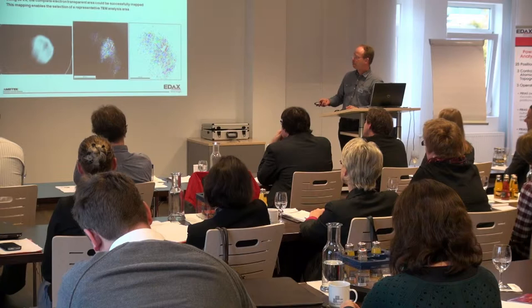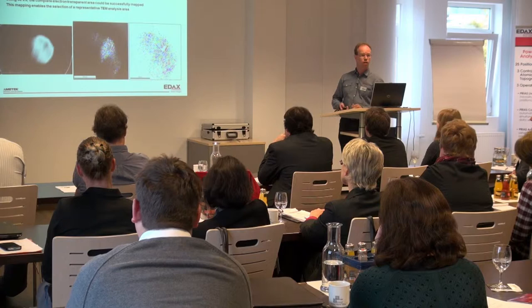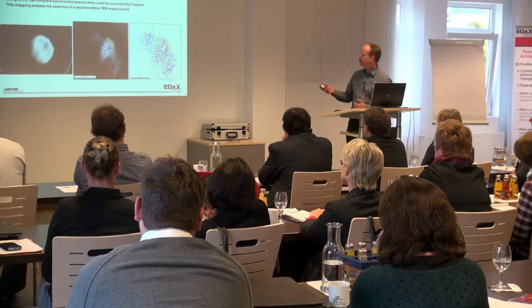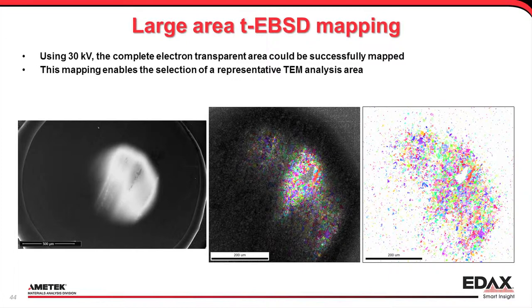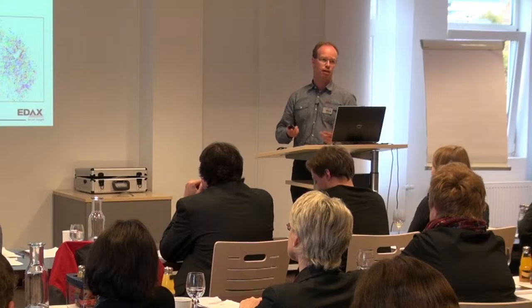I can do a normal mapping in transmission mode. If you look at the scale, that's 200 microns — so almost the entire electron-transparent area here produces indexable patterns. And an interesting thing: there's my hole, and right next to it is the one anomaly. There's a really large grain here that's not representative for the entire sample, so that's not one you want to look at in the TEM if you want to examine the entire structure. That's something that's difficult to see if you don't look at the entire sample before going to the TEM.